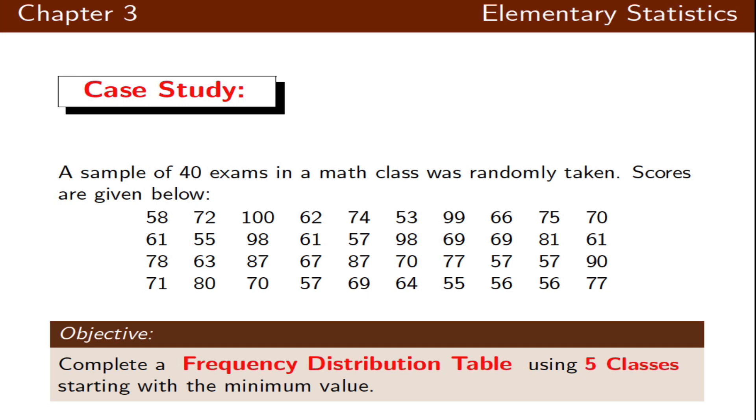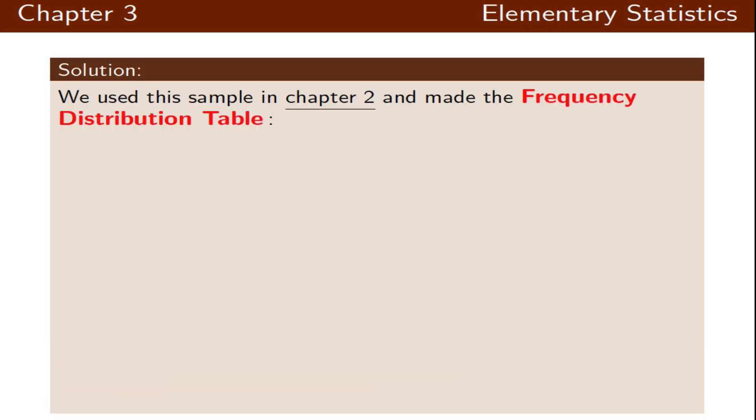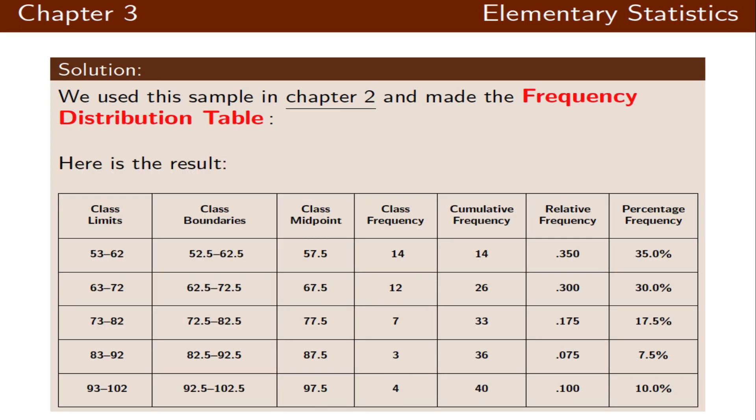We had an example of 40 exams. The data were not sorted and we want to take five classes in this frequency distribution table. We did this problem in the previous chapter and organized our frequency distribution table.